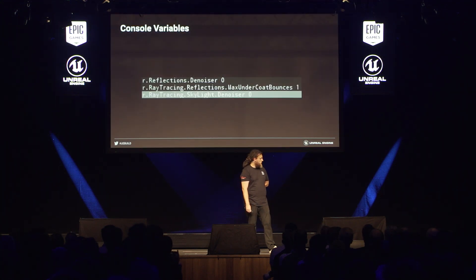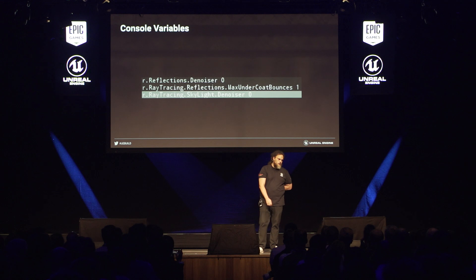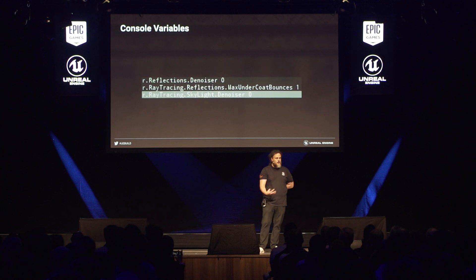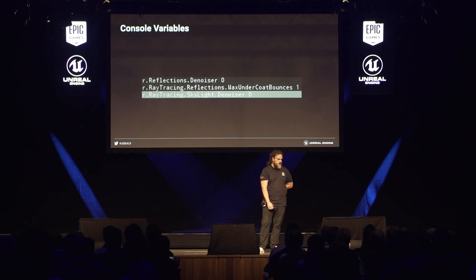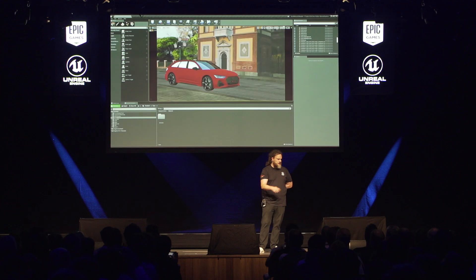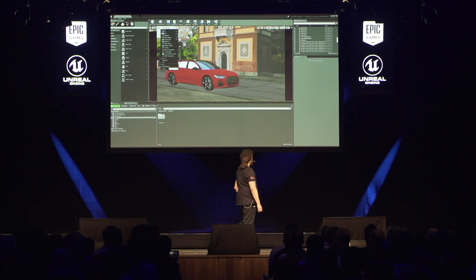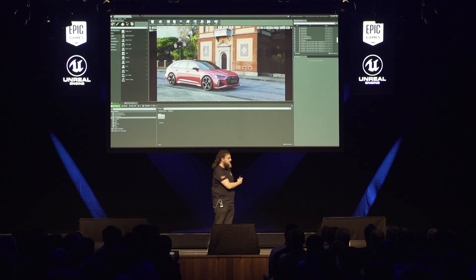Something also really important is certain console variables we used to make this run. We turned off all the denoisers — like the reflection denoiser and the GI denoiser. The second command is to enable the under-coat bounces on the clear coat. We turned off all that stuff, and this is a glimpse into a future version of Unreal Engine.